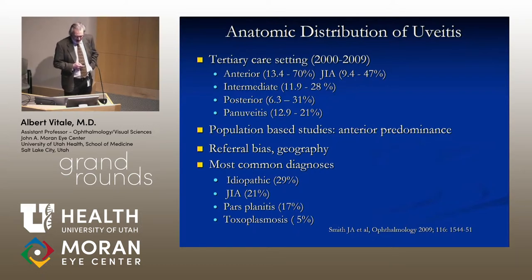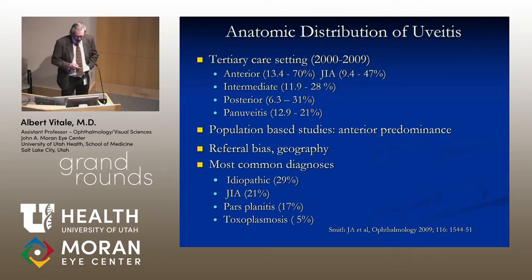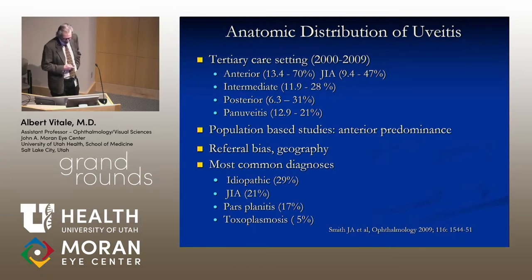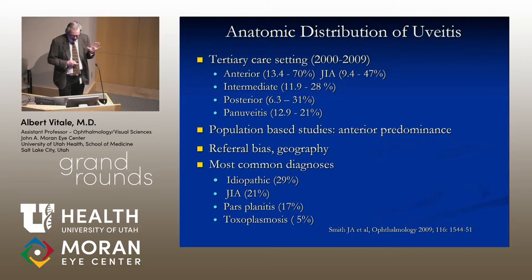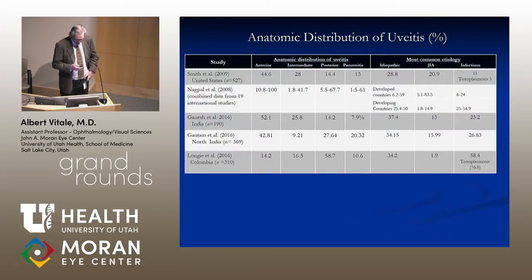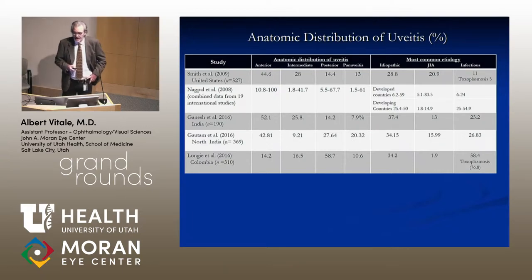These shifts are thought to be due to better diagnosis and treatment of toxoplasmosis and toxocariasis. There is obviously referral bias and dependence on geography. Population-based studies show a predominance of anterior uveitis, but at the Moran Eye Center we see a lot of intermediate and posterior uveitis. In the largest epidemiologic study in the United States at the NEI, anterior idiopathic uveitis was most common, followed by juvenile idiopathic arthritis-associated iridocyclitis. Around the world, there is a much higher incidence of infectious uveitis in India and Colombia.